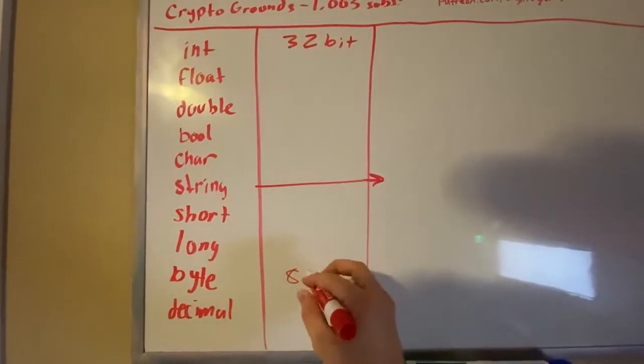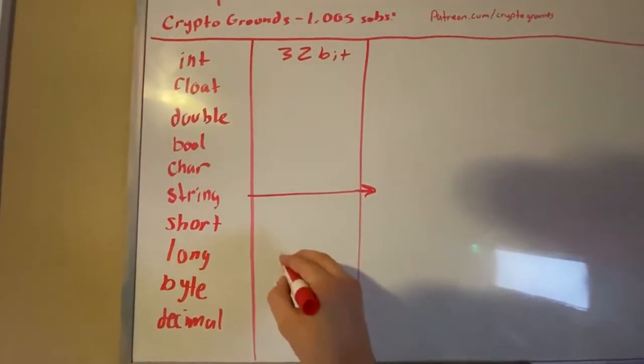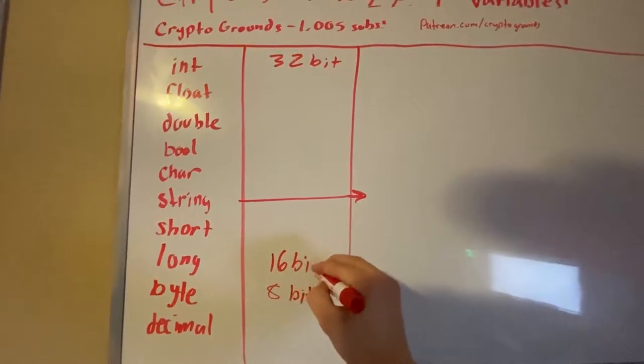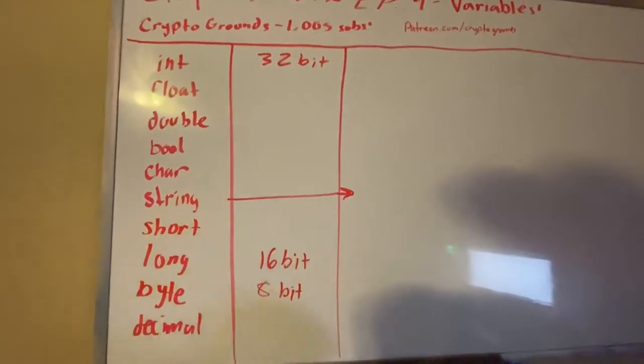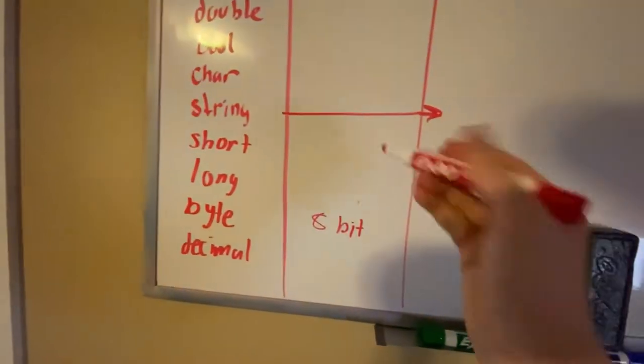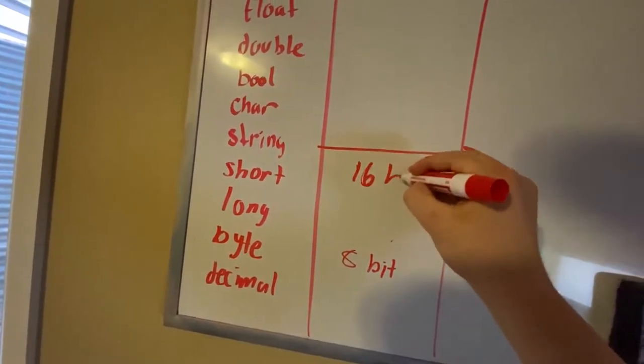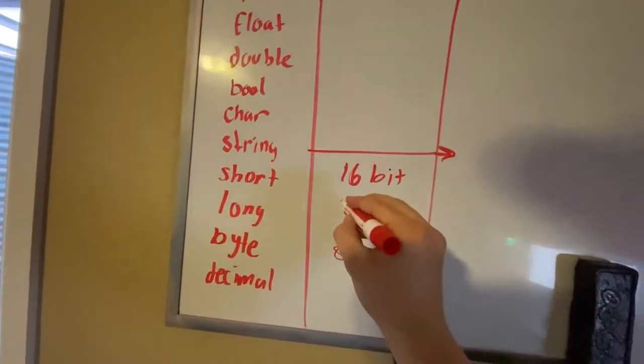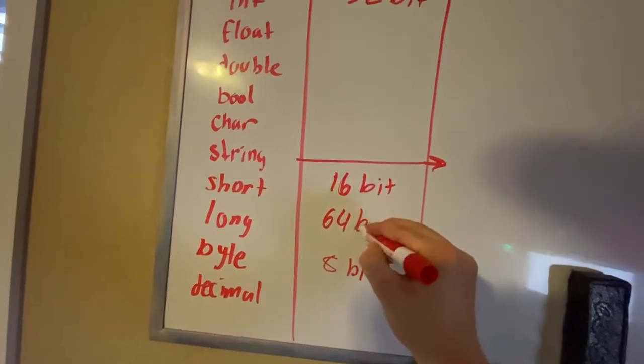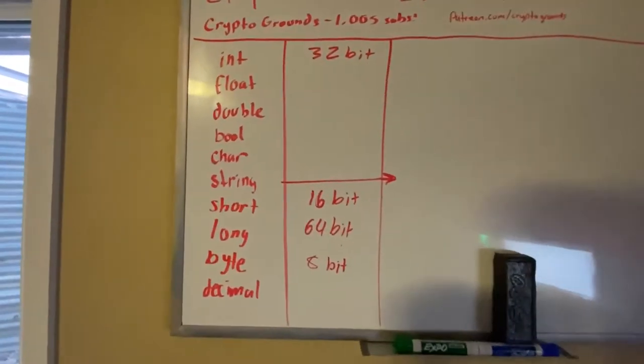We have int, short, long, and byte. So basically byte is an 8-bit version of an int. Long is a 16-bit version and short... no, no, no, I flipped them. My apologies. Short is 16-bit and long is 64-bit of an integer.